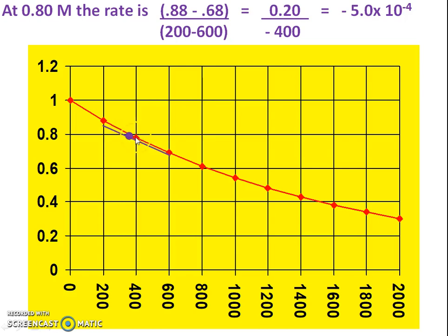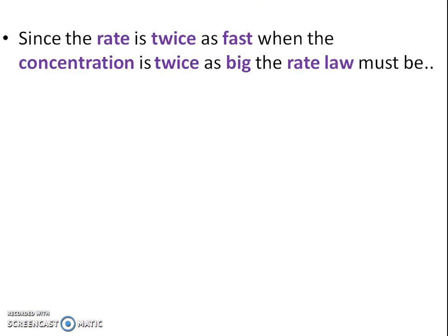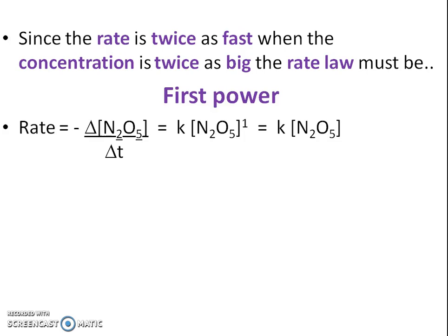Let's say we're talking about the rate at 0.8 molarity. We do our change in concentration over our change in time and get a value. That's just at that one particular spot. Now at 0.4 molar concentration, we get a different rate. The rate is twice as fast when the concentration is twice as big, so the rate law must be first power. Plugging and chugging, we get rate equals K times the concentration of N2O5.